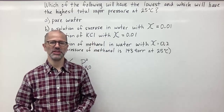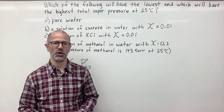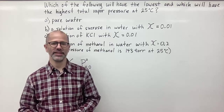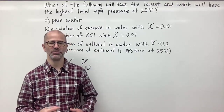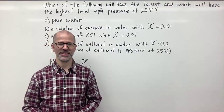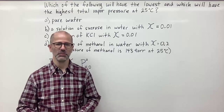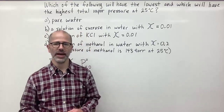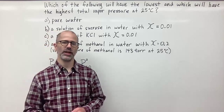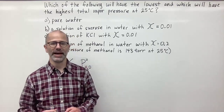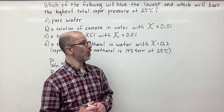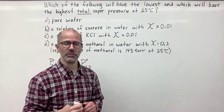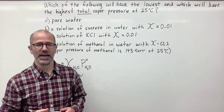Hello everyone and welcome back. My name is Mr. Kovalt and in this video we're going to be going over Raoult's law and how it's applied to find the partial pressures of different substances or different solutions. We're going to start with the question: which of the following will have the lowest and which will have the highest total vapor pressure at 25 degrees Celsius? The key word here is total vapor pressure.